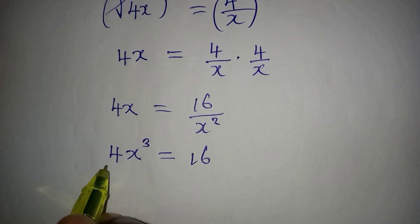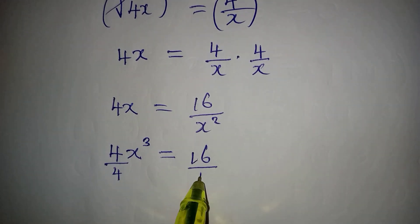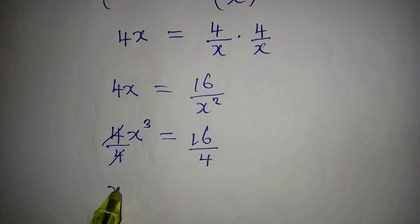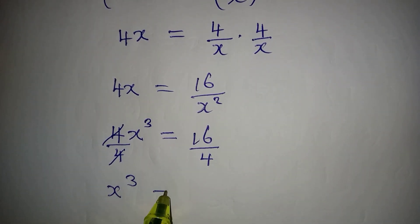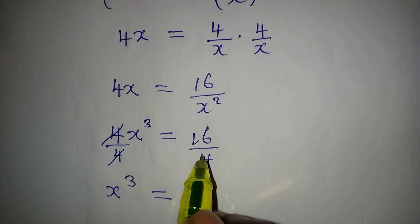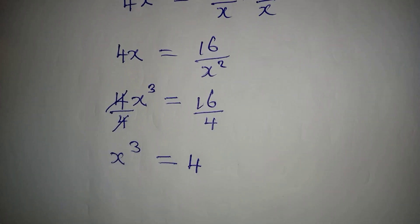Divide both sides by 4, so that this will go with this. And we'll be having x to the power of 3 equal to 16 divided by 4, and it is 4. Remember, we are trying to get only the real solution.